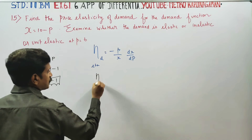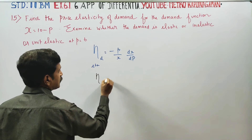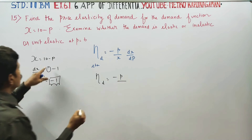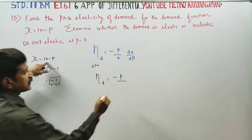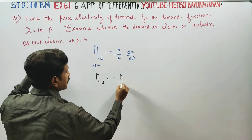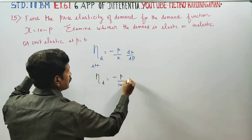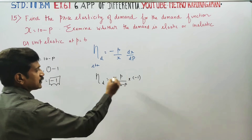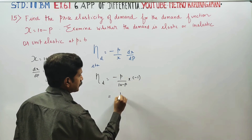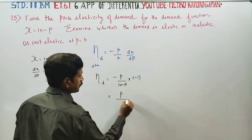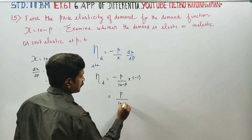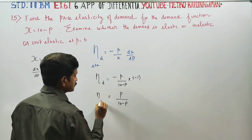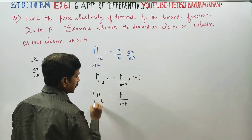Eta D, elasticity of demand: eta D is equal to minus p by x. Substituting the value of x as 10 minus p into minus 1. This gives plus p by 10 minus p. So the elasticity of demand is ready.